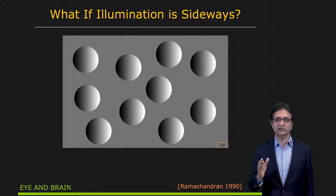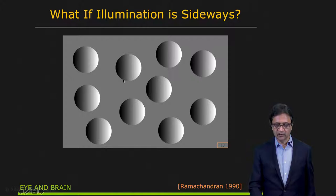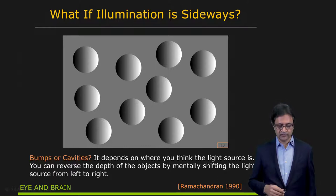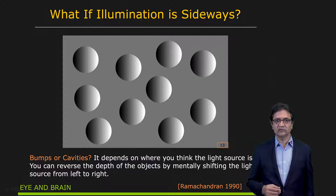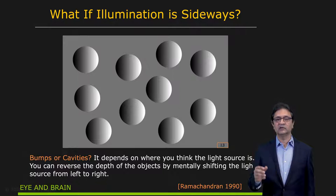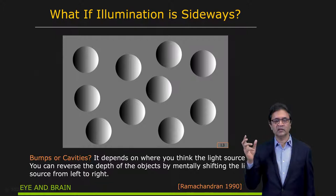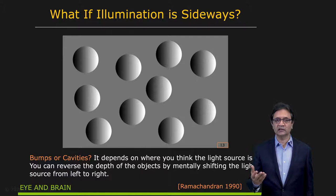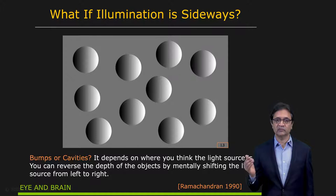So what happens when the illumination is coming from the side? It turns out that people don't really come up with one interpretation as to whether these are convex bumps or concavities — it goes about 50/50. Whether you see bumps or concavities depends on where you think the light source is. If you imagine the light source from the right side, you interpret these as convex bumps. If you mentally move the light source to the left side, you can convince yourself they are actually concavities. There isn't a natural assumption being made because left lighting and right lighting are equally likely, so you imagine the lighting first and then interpret the shading.